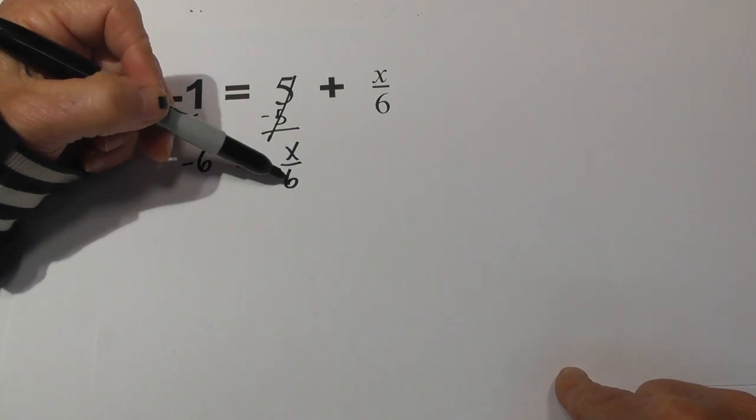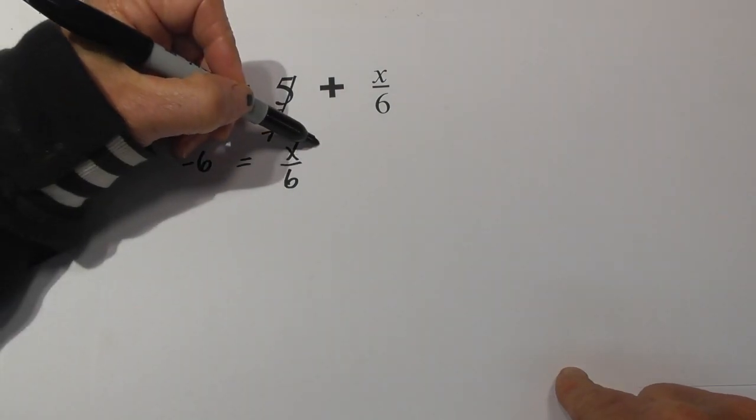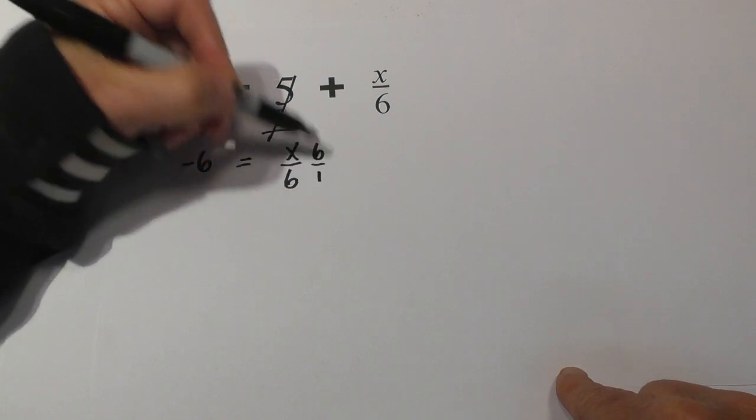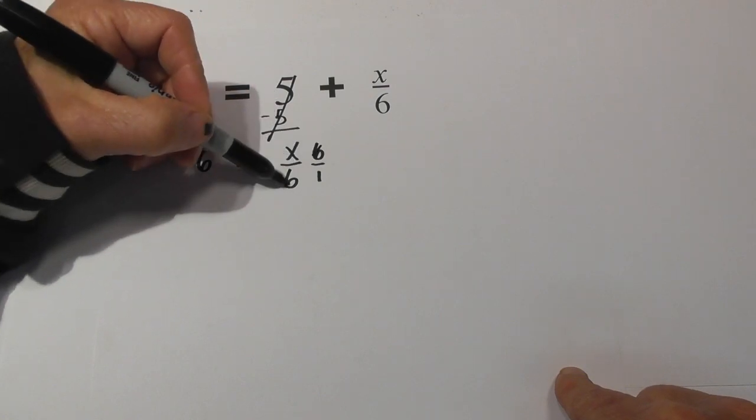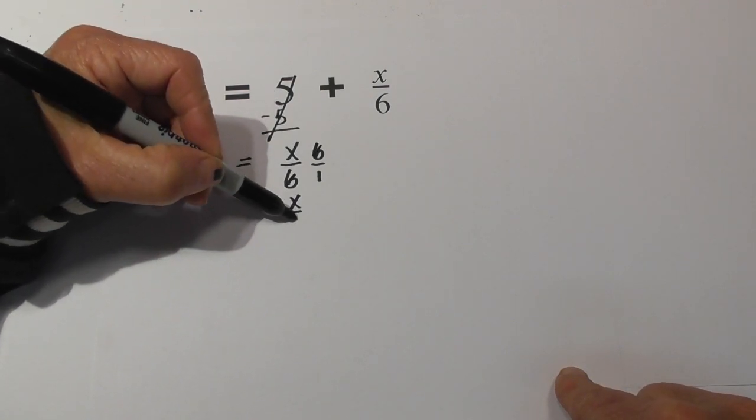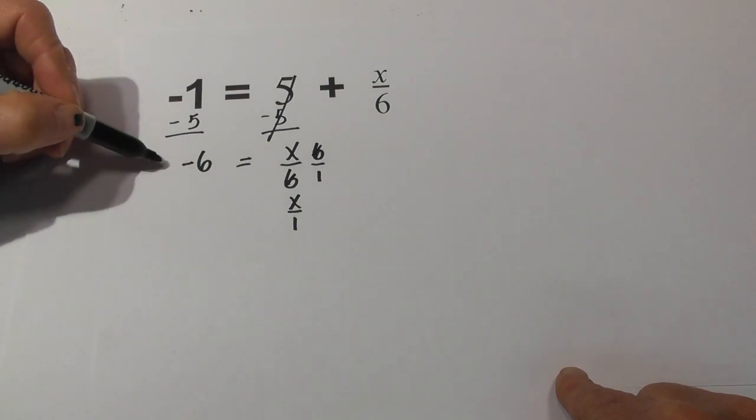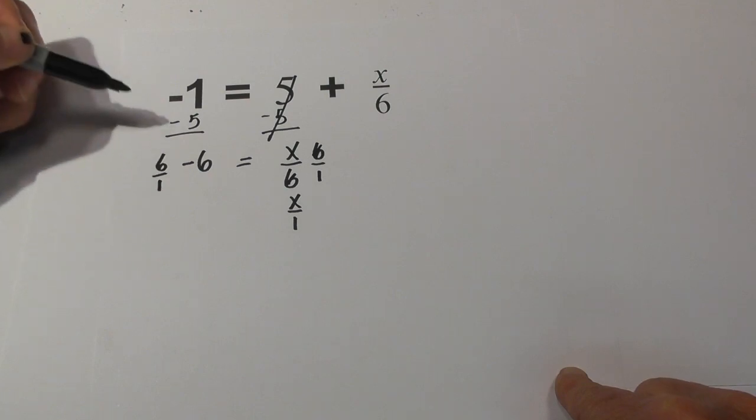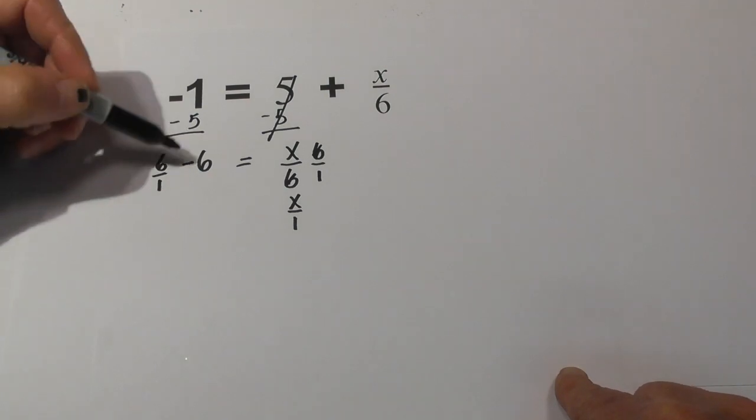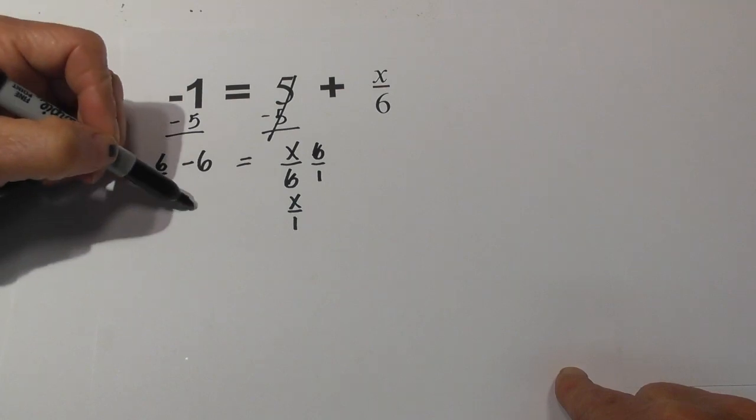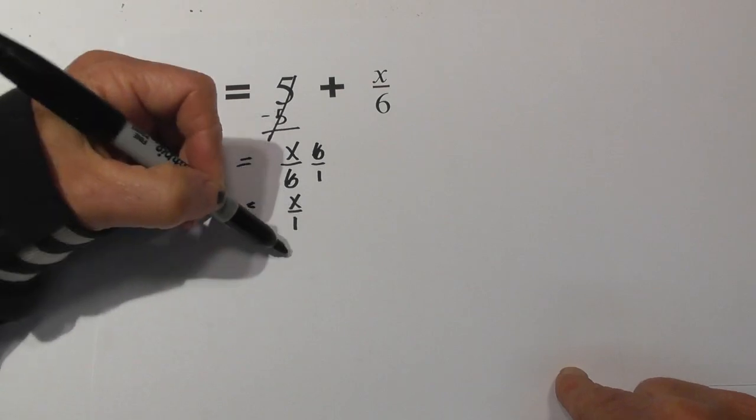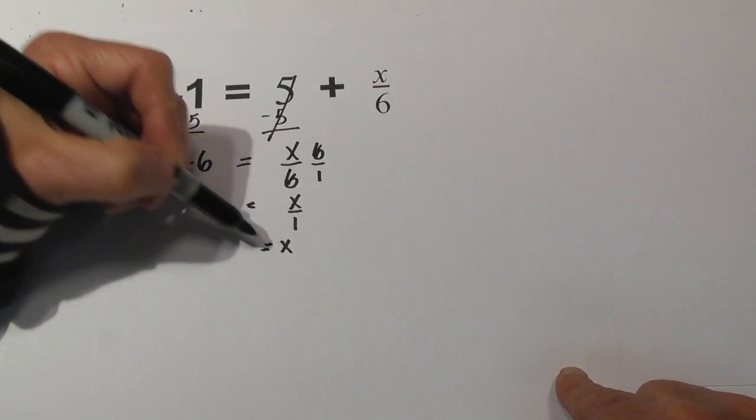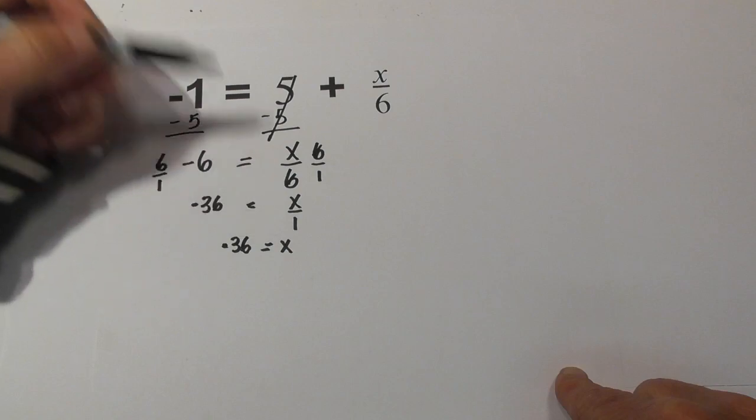Now we can complete a reverse operation. This is division. So we're going to multiply it by 6 and we're going to rewrite it 6 over 1. The 6s cancel and that gives us x over 1. And then we're going to multiply negative 6 times 6 over 1. So a positive 6 and a negative 6 equals negative 36. I can rewrite the x as just x equals negative 36.